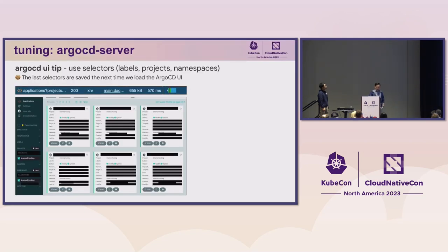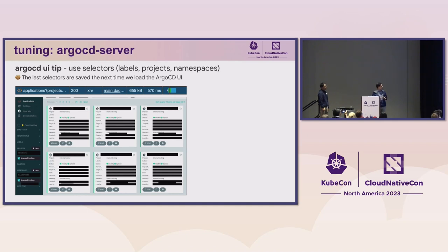Still on the Argo CD server — more of a tip for UI users. We can use selectors to filter applications by their label values, projects, or namespaces. In this example, we select one project in one namespace, showing only a fraction of total apps. One great feature is that selectors are saved the next time we load the Argo CD UI, which is quite handy.